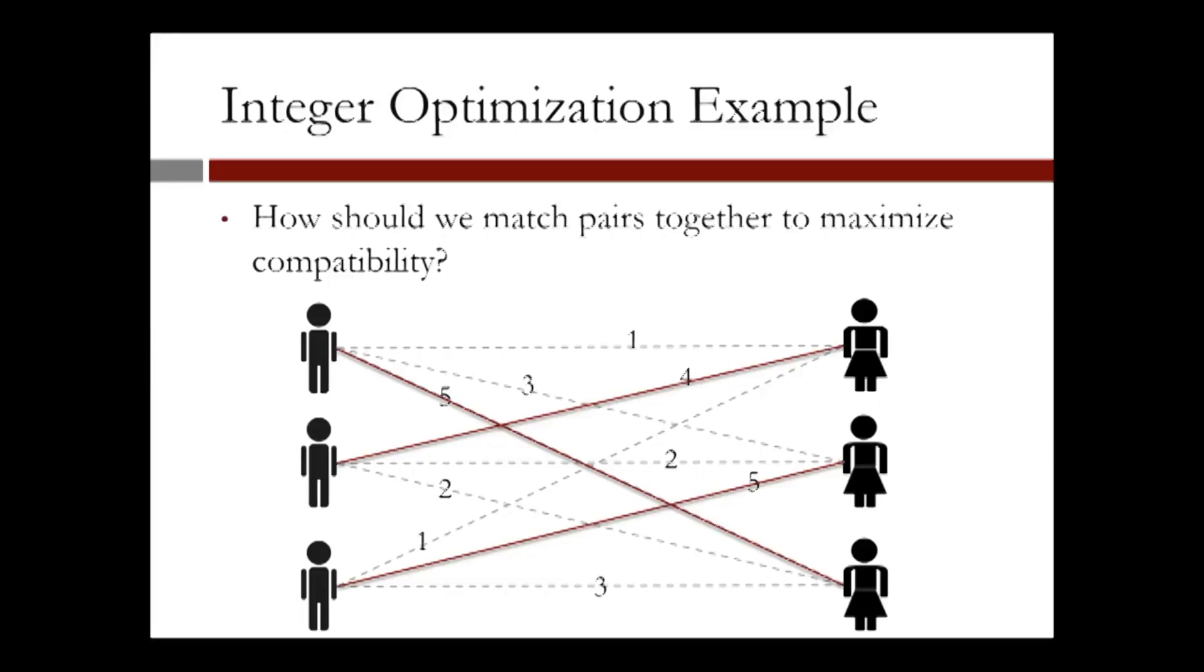In this case, man one is matched to the third woman with a compatibility score of five, the second man to the first woman with a compatibility score of four, and the third man to the second woman with a compatibility score of five, and a total compatibility score of 14.